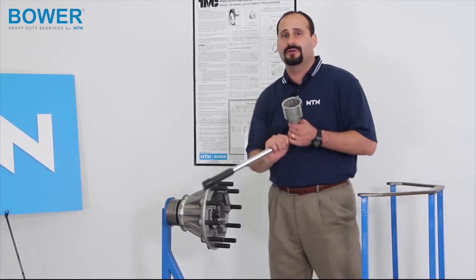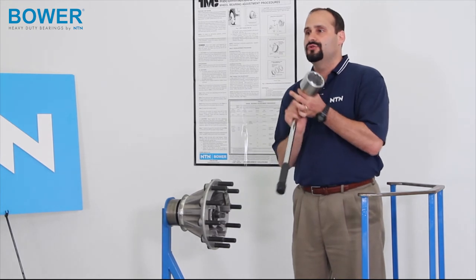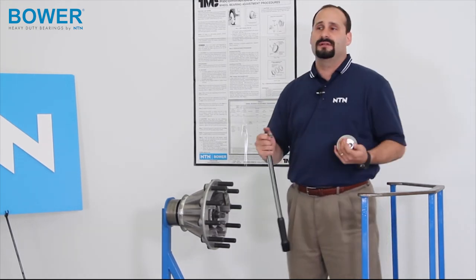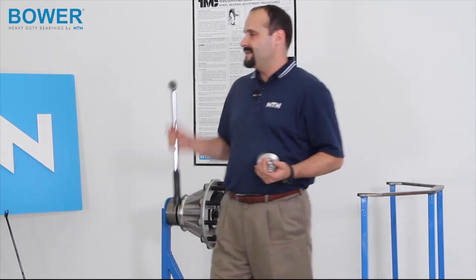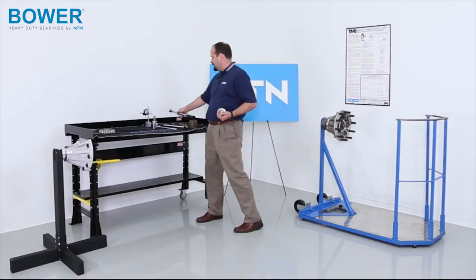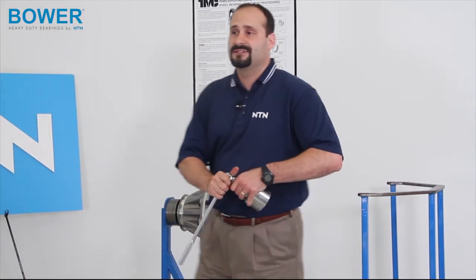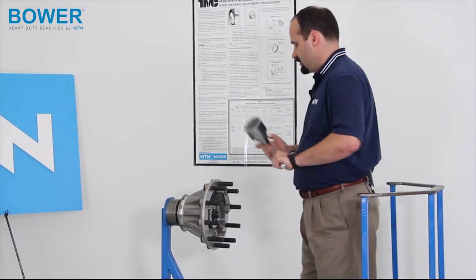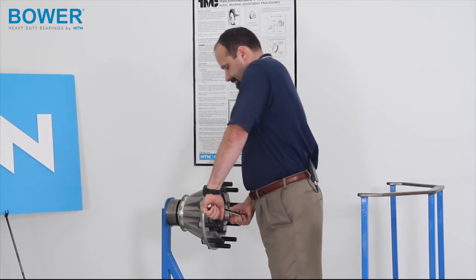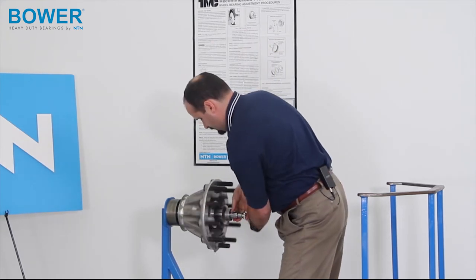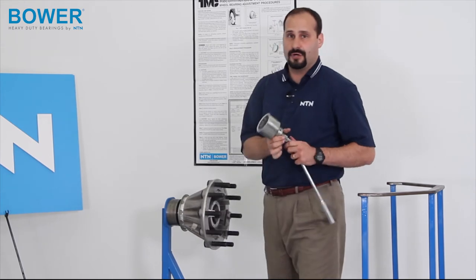Again, that half turn assumes a new spindle, a new nut. This well-worn spindle will do about a quarter and that will get us our appropriate end play. What I'll do is I'll follow the TMC procedure and we'll see what happens when we actually measure our end play. So, we're going to back off a half turn. There we go. So, we've backed off a half turn.